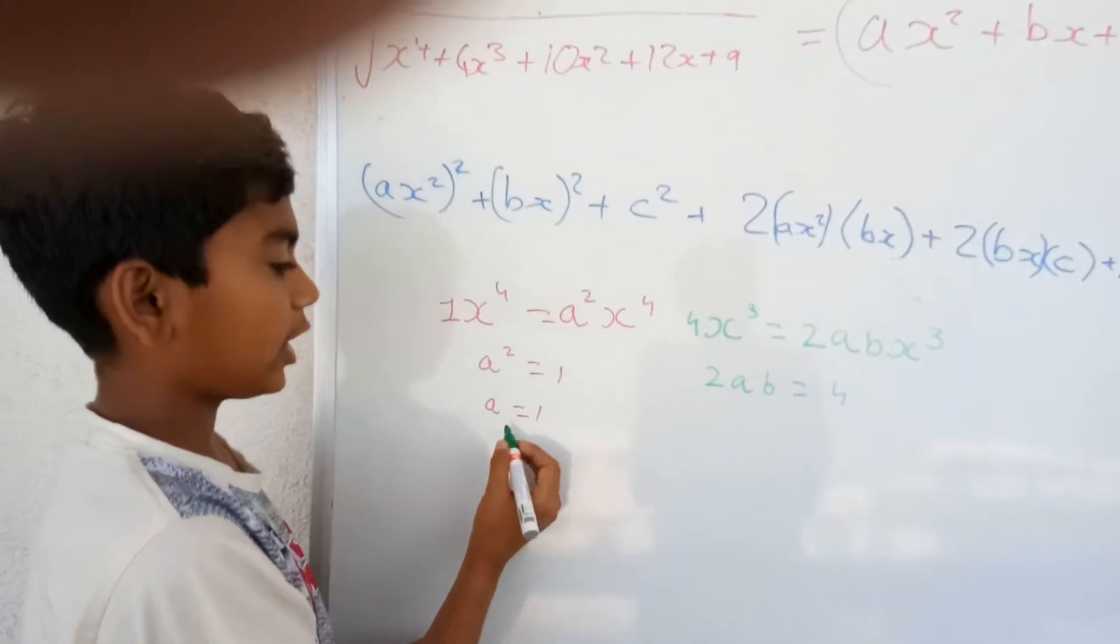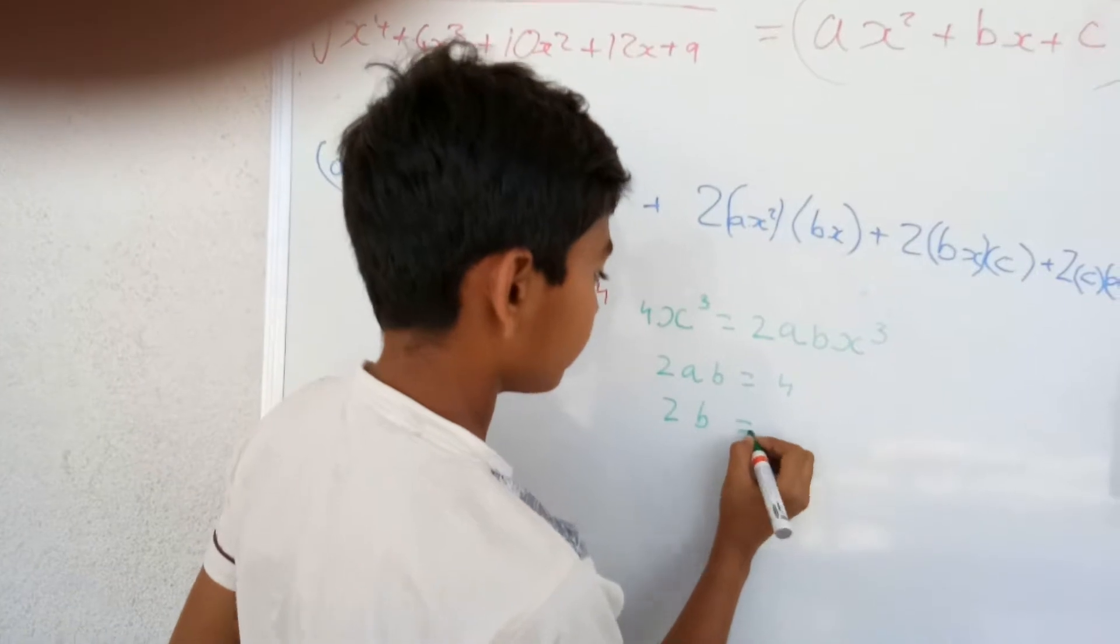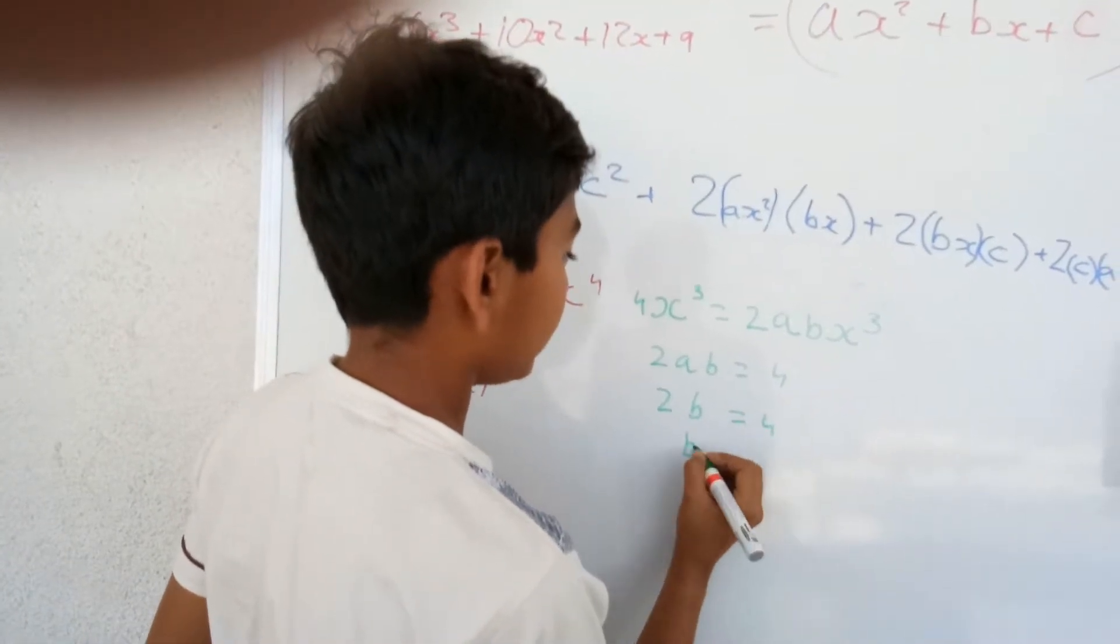But the value of a is 1. So, we will get 2b equals to 4. Therefore, b equals to 2.